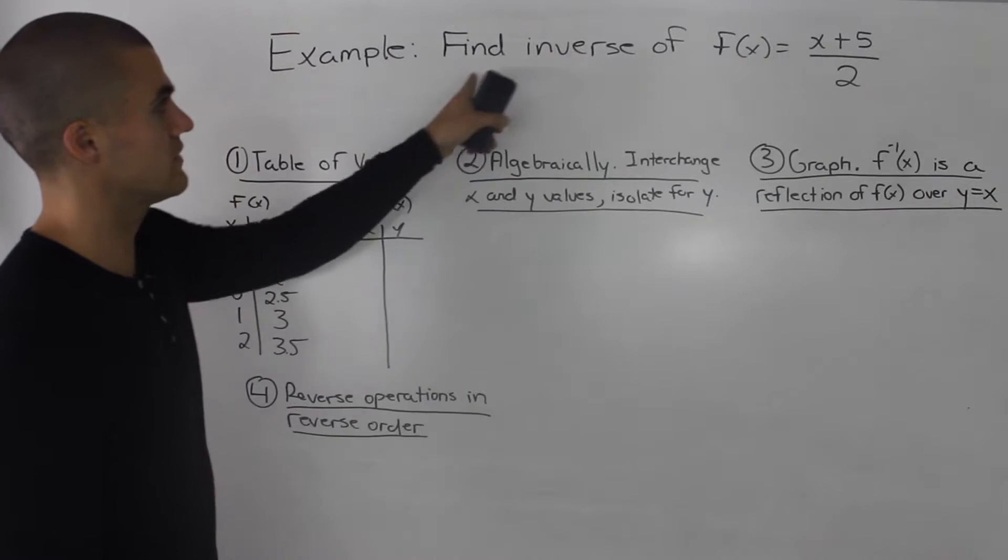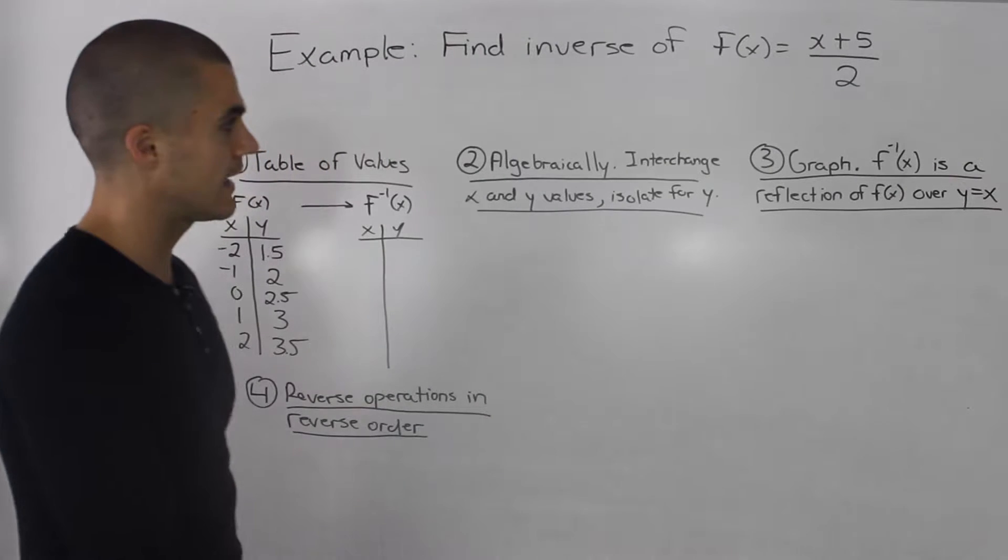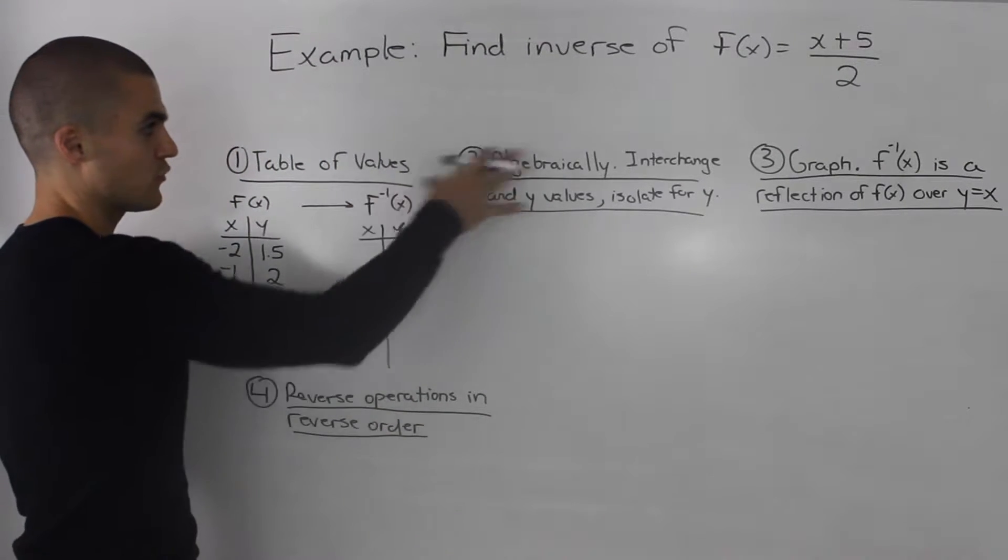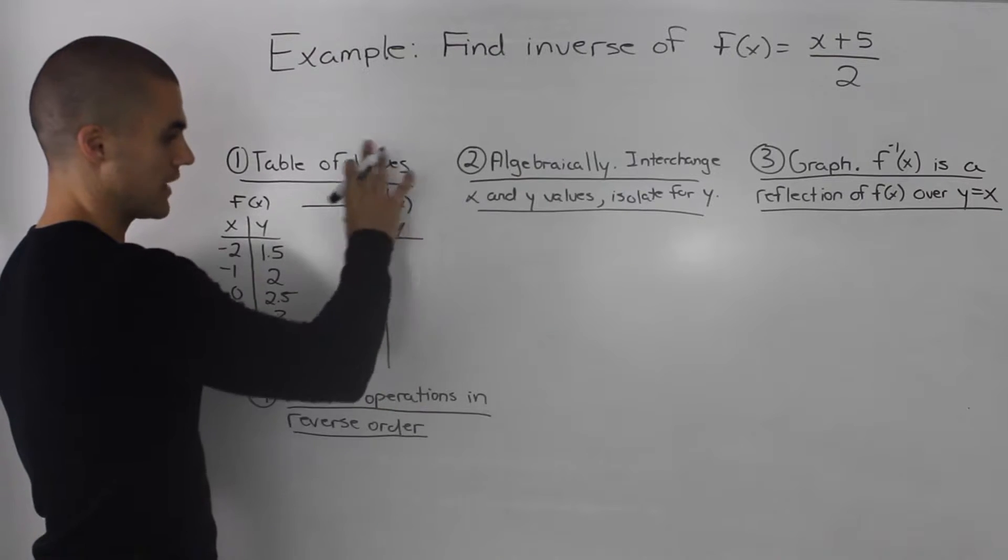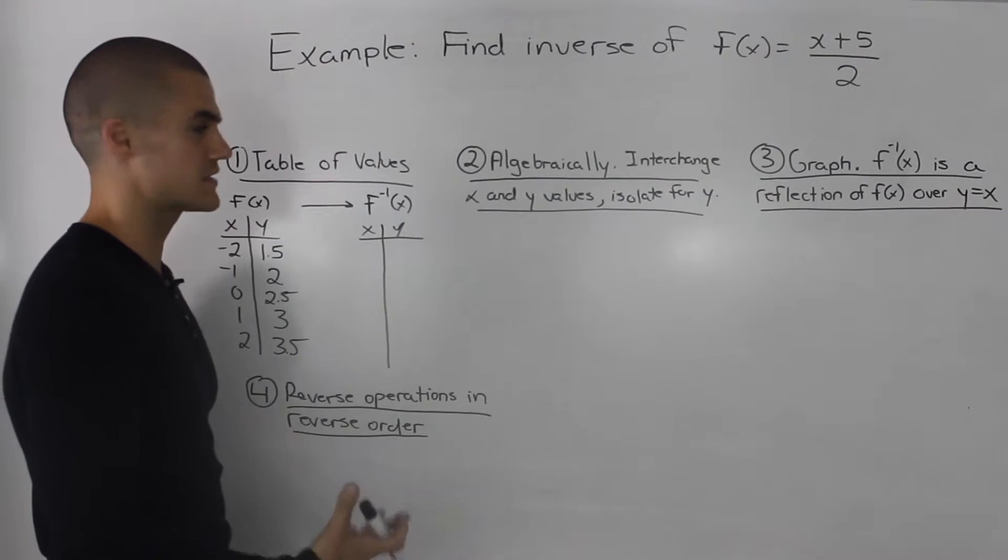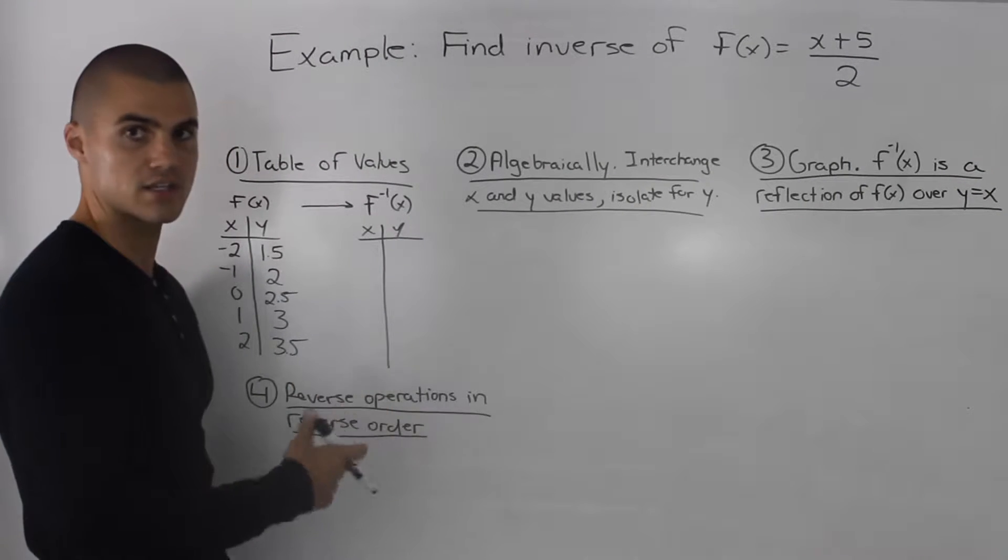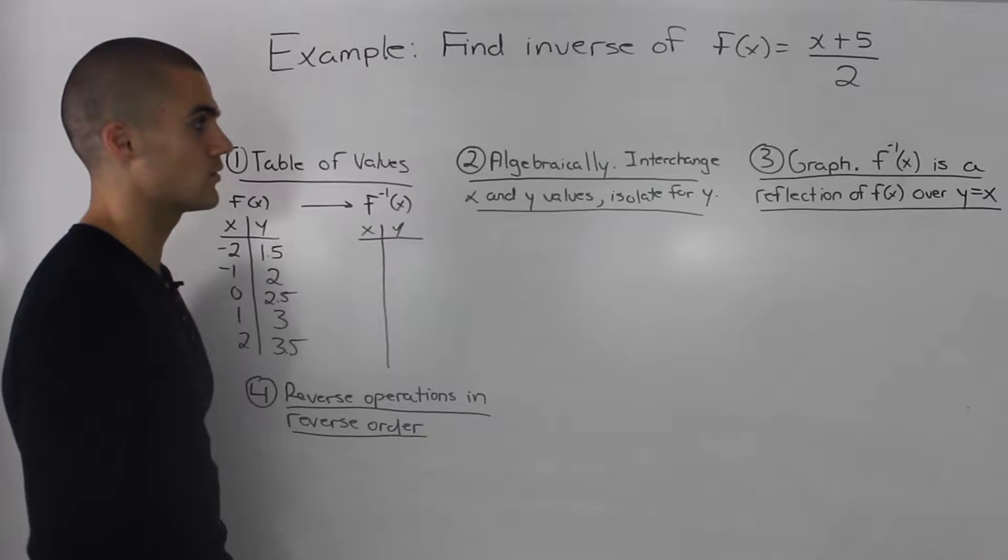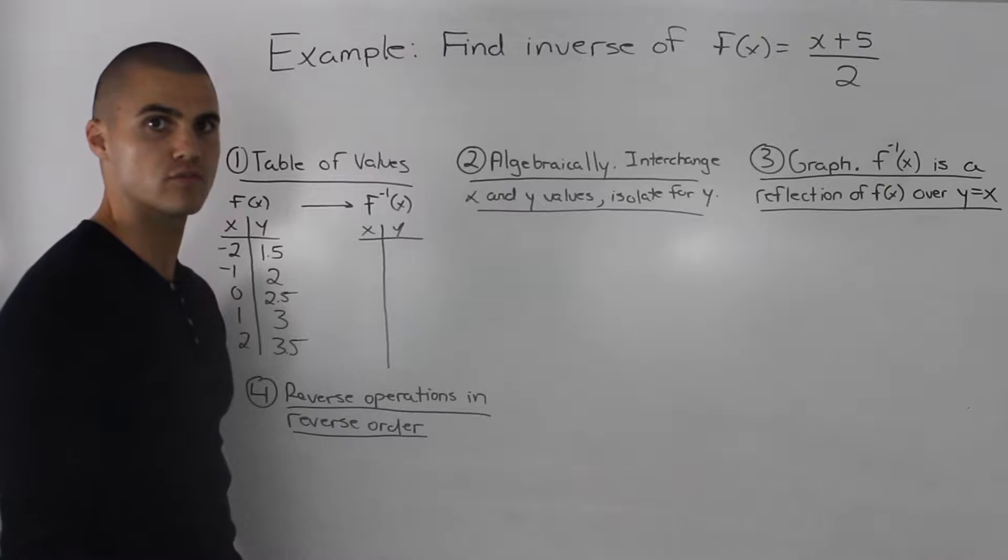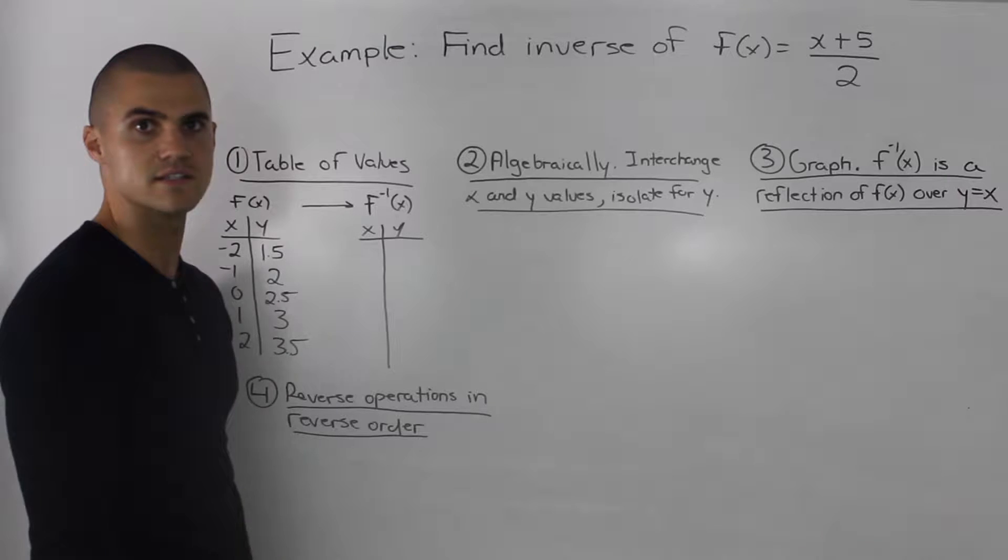Moving on to an example, we have to find the inverse of f(x) equals (x+5)/2. And as we did in the previous overview video, I'm going to find the inverse in four different ways. So I kept all four ways written out from the previous video just for convenience sake. However, in each way I'll be going through the process a lot more quicker. So if you haven't, make sure that you watch the previous overview video where I go through each of these four steps in a lot more detail.